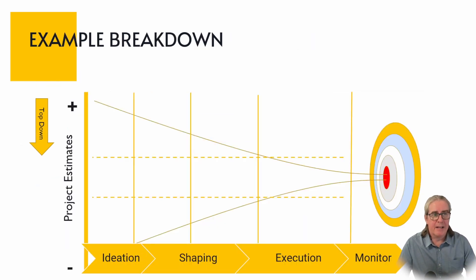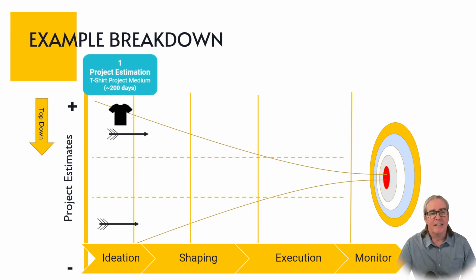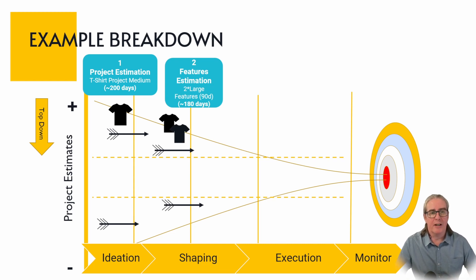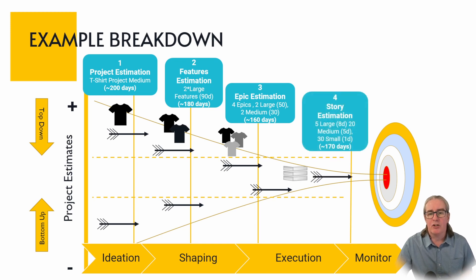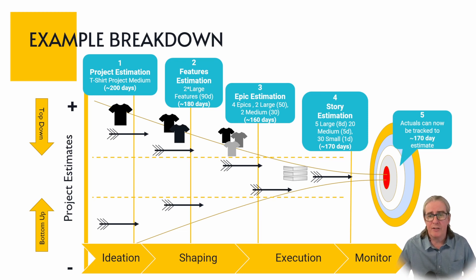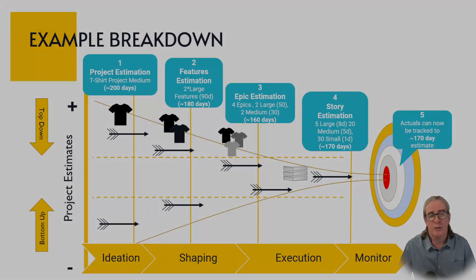So let's bring this back into the project phasing. Within the ideation phase, we thought this was going to be 200 days. Then in shaping, with a couple of features, we think it's maybe 180 days. Into the epic part with more bottom-up estimation, it's 160. And then into execution, we're at 170 days. Finally, once the project goes into that monitor phase, you can track back and see if the 170 days really played out — and if it didn't, improve that process over time and learn some lessons about what's going on.